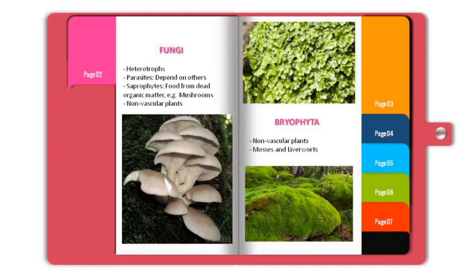Fungi — all of you have seen mushrooms. Fungi are heterotrophs, so they are dependent on others. Some fungi can be parasites and directly depend on others, while some are saprophytes, deriving their food from dead organic matter. For example, mushrooms. These are also non-vascular plants.